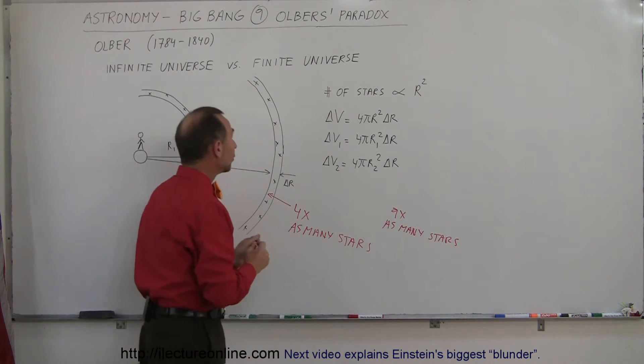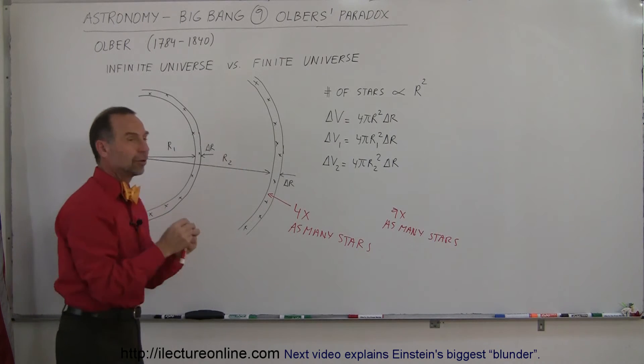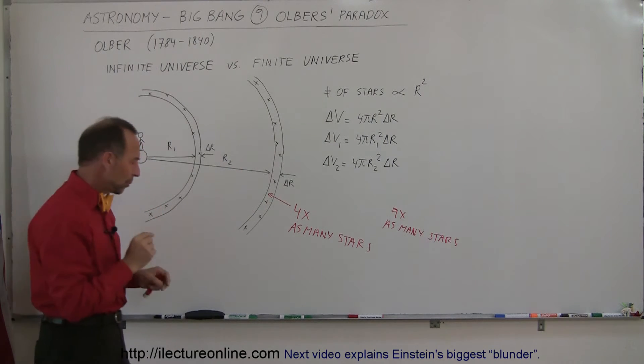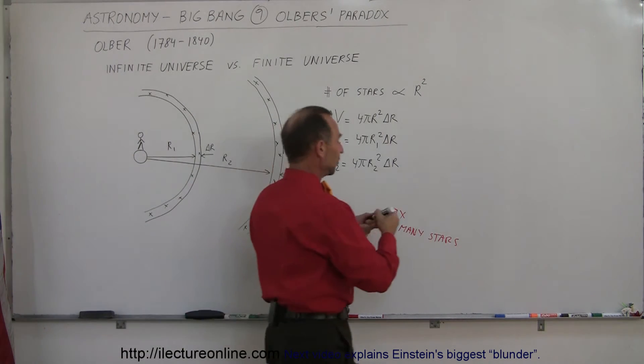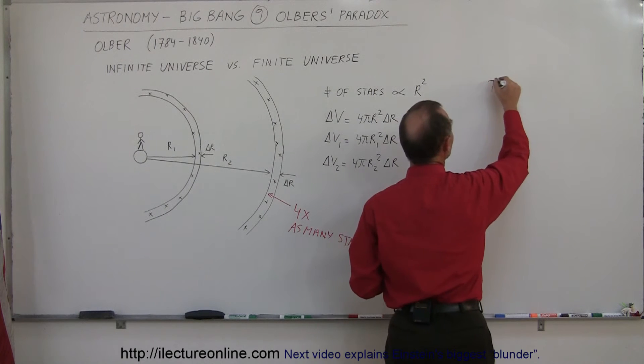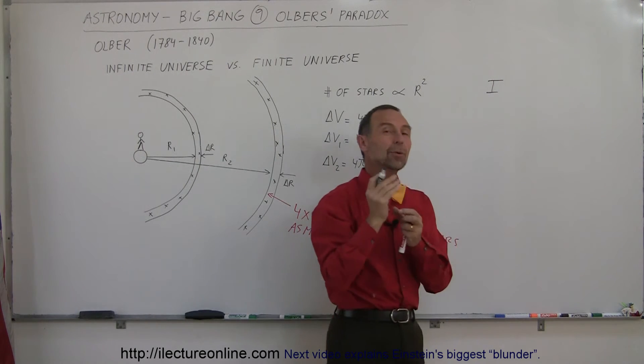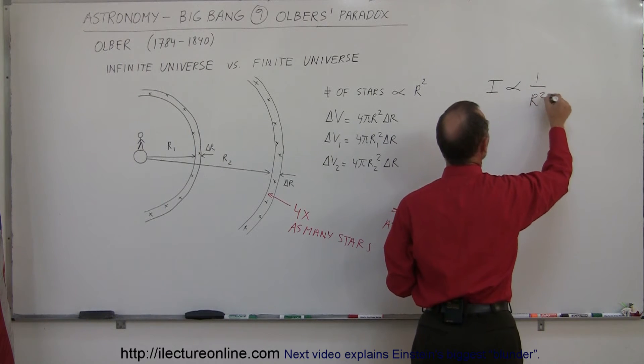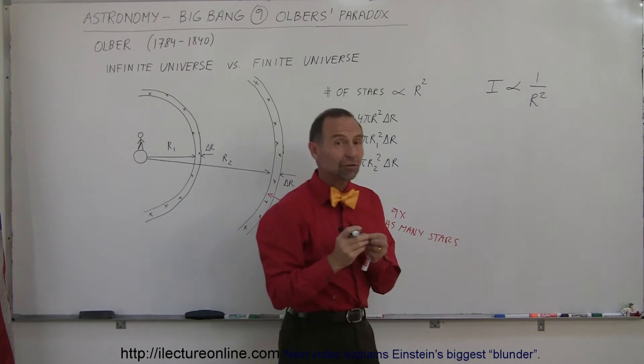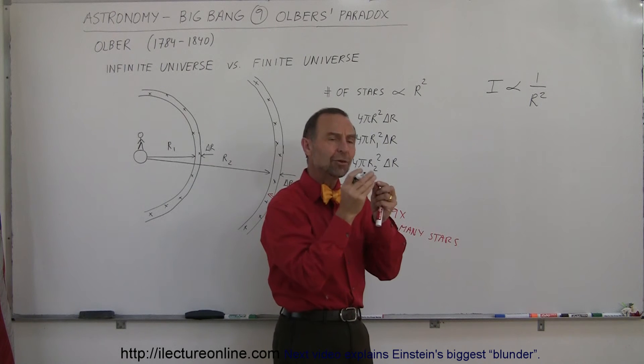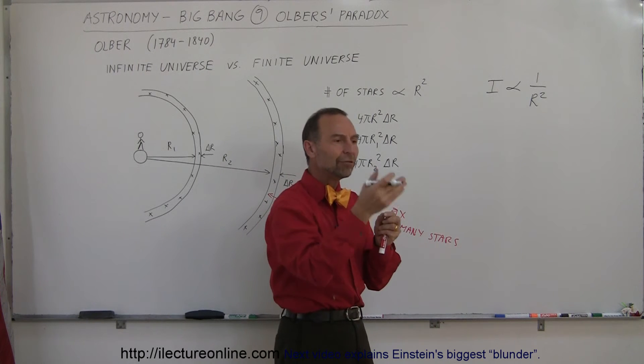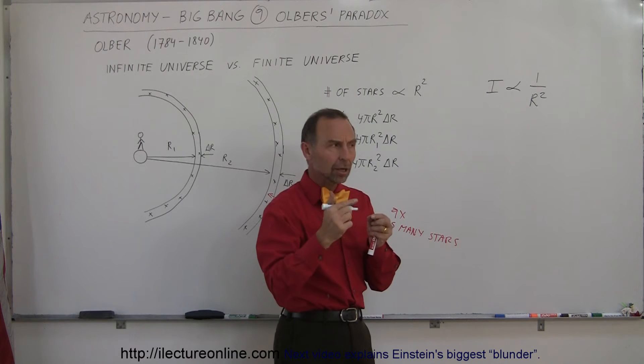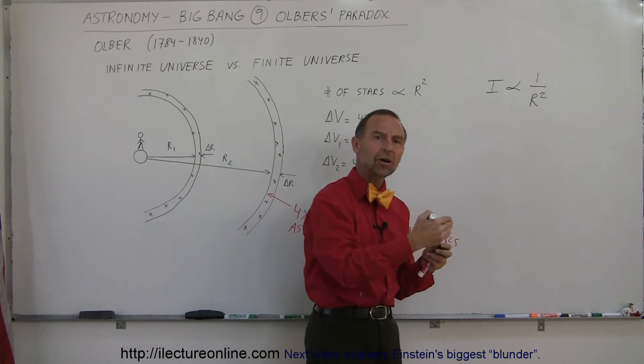Now I also realize that the farther a star is, the dimmer the light becomes. We knew and understood at the time from physics that the intensity, the amount of light we would get from any one star, would be proportional to one over the distance squared. This means if the star is twice as far away, the intensity would only be one-quarter. You would only get one-fourth as much light from each star, but it would be four times as many stars.